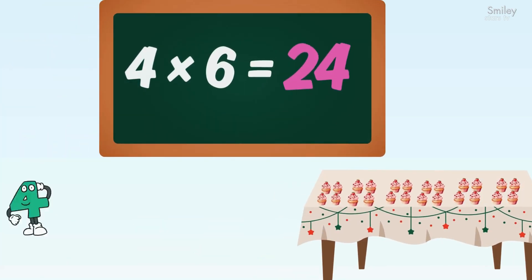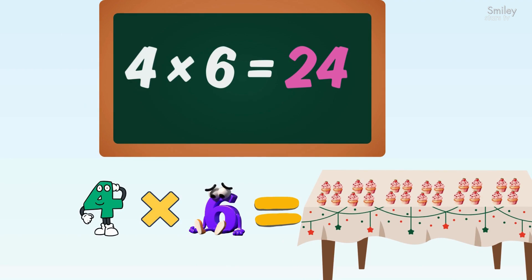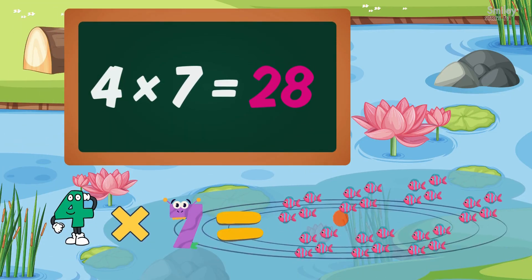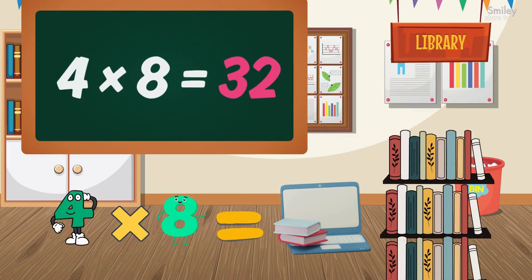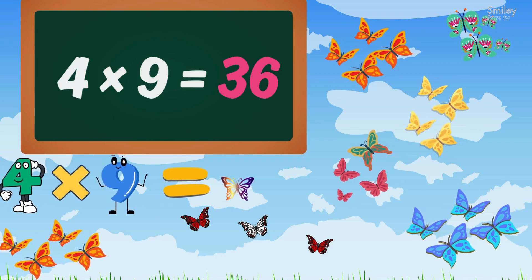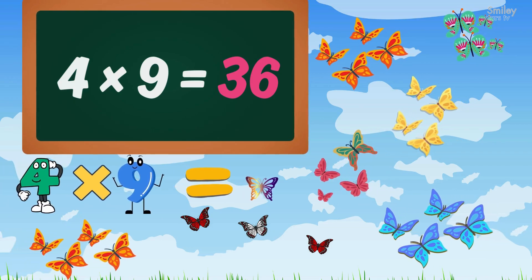Four sixes are twenty-four, we're learning plenty. Four sevens are twenty-eight, four eights are thirty-two. Four nines are thirty-six, let's keep counting two.